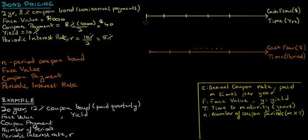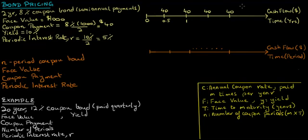Now let's see how this bond works. Suppose today is time zero. At the end of six months or 0.5 years, the bond holder will receive the first coupon payment of $40. Six months after that, or exactly one year from today, the second coupon payment of $40 will be received. The remaining two coupon payments of $40 will be received at the end of the next two six-month periods. Since the bond matures in two years, the bond holder will receive the face value of $1,000 in addition to the last coupon payment of $40 at maturity.